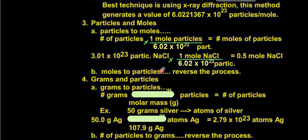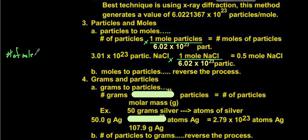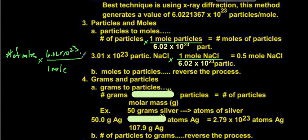If we're going moles to particles, we reverse the process. We take our number of moles and multiply by 6.02 × 10²³ particles per mole — we just flip it over. So: number of moles times 6.02 × 10²³ particles over 1 mole; moles cancel, giving us particles.